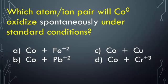Which atom-ion pair will cobalt metal oxidize spontaneously under standard conditions? Looking at these answer choices, you have to determine which metal and which ion would be the ones that would be reacting and spontaneous, meaning the atom is above the ion on Table J. Which one is right? That would be choice A.